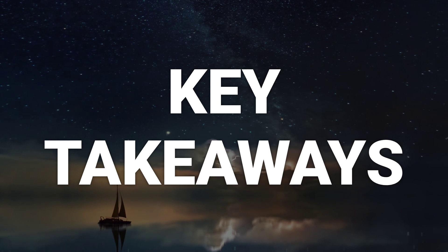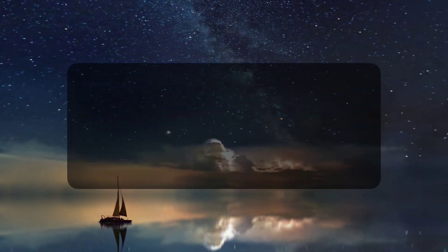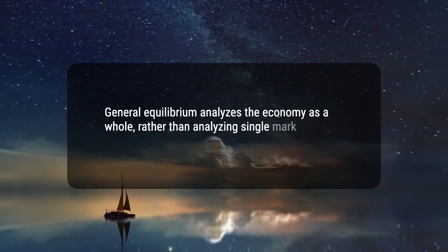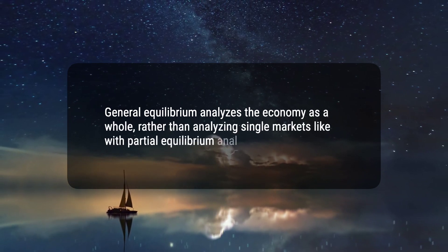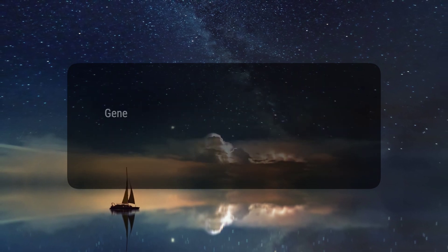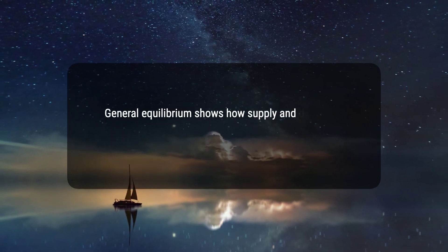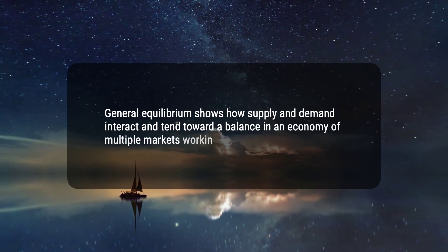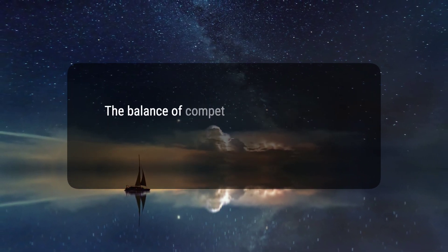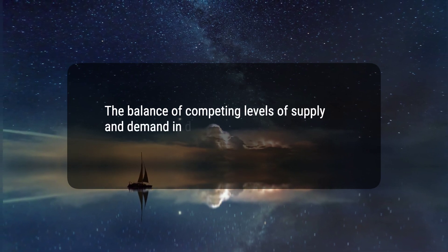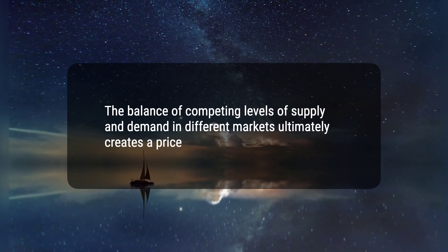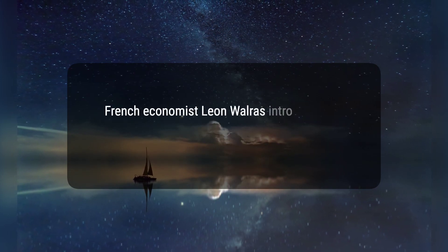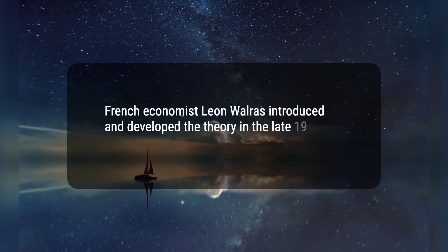Here are four key takeaways. 1. General equilibrium analyzes the economy as a whole, rather than analyzing single markets like with partial equilibrium analysis. 2. General equilibrium shows how supply and demand interact and tend toward a balance in an economy of multiple markets working at once. 3. The balance of competing levels of supply and demand in different markets ultimately creates a price equilibrium. 4. French economist Léon Walras introduced and developed the theory in the late 19th century.